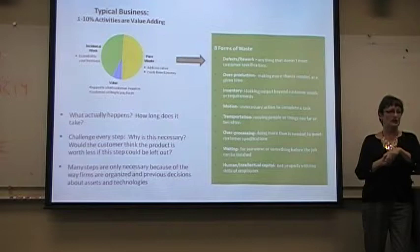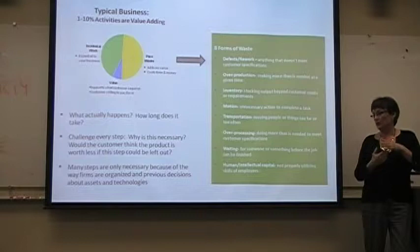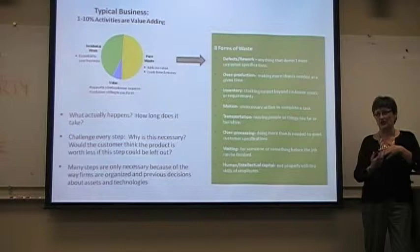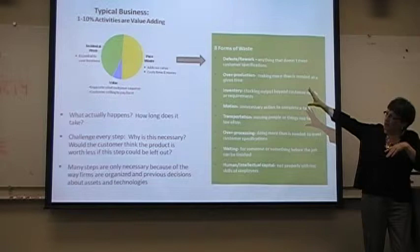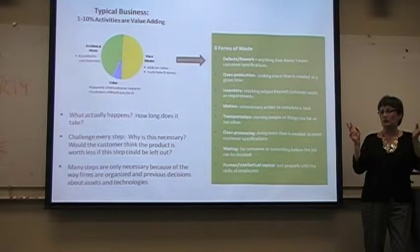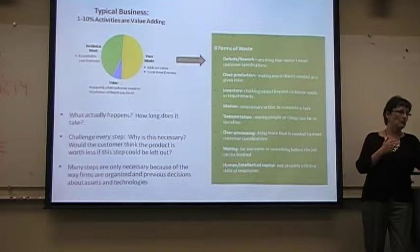And human and intellectual waste, not really properly utilizing the skills of employees. Often there really is a lot of knowledge out there and the people know what is wrong in the process, but they aren't always being asked. Those are examples of waste, which as you can see is pretty big in that pie chart. Incidental work, those are those things that we get into, a lot of companies have put in things to meet what they perceive as the Sarbanes-Oxley requirements. Value, you can see, very small.